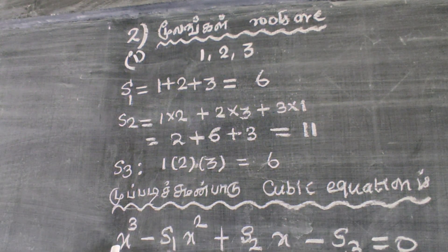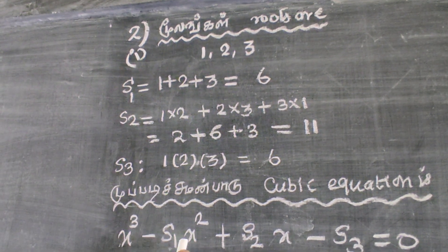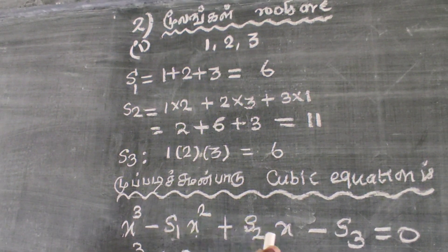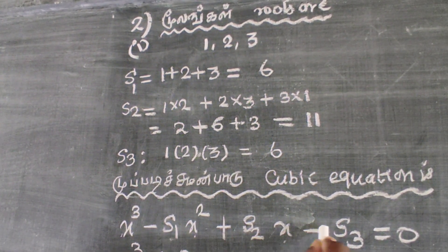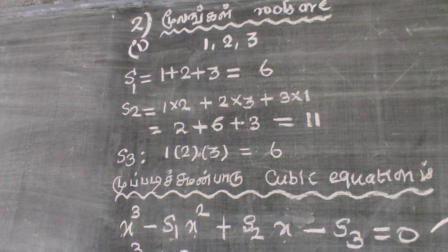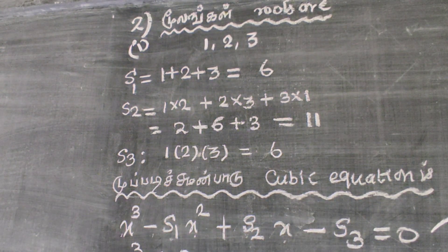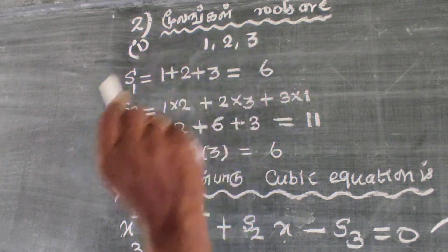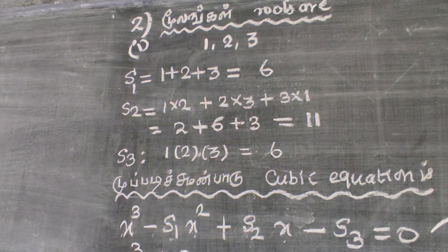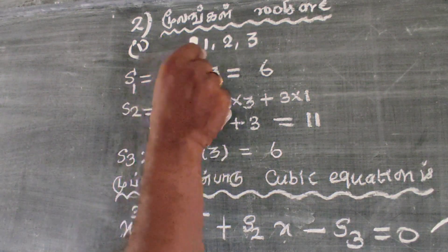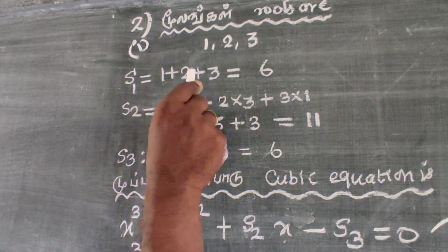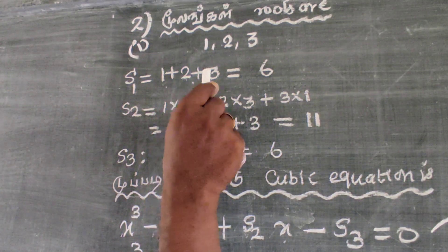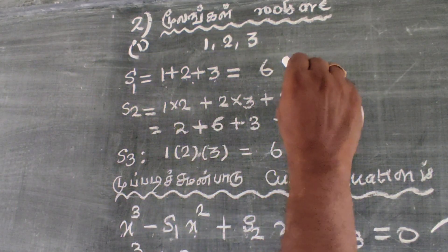The cubic equation formula is: x cube minus S1 x square plus S2 x minus S3 equal to 0. S1 is the sum of roots: alpha plus beta plus gamma. So S1 equals 1 plus 2 plus 3, which is equal to 6.